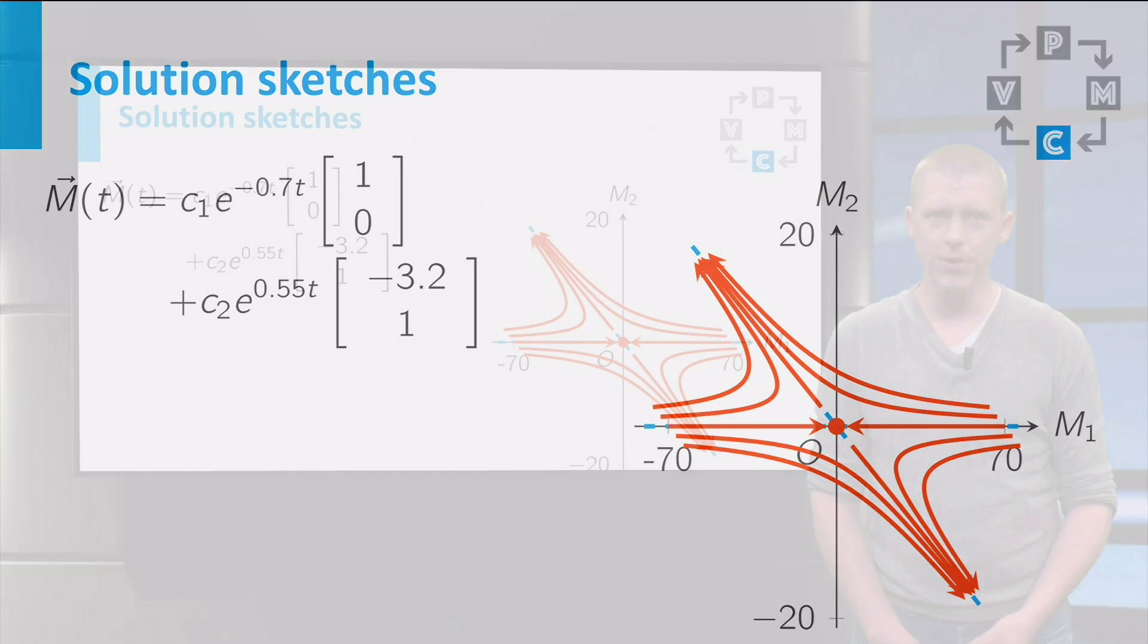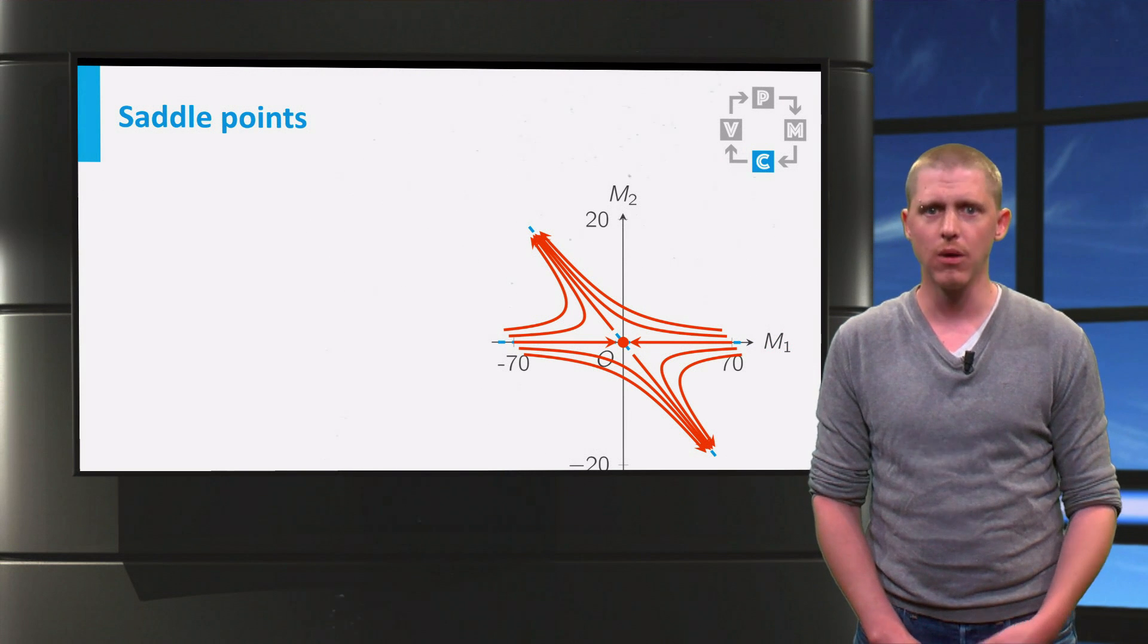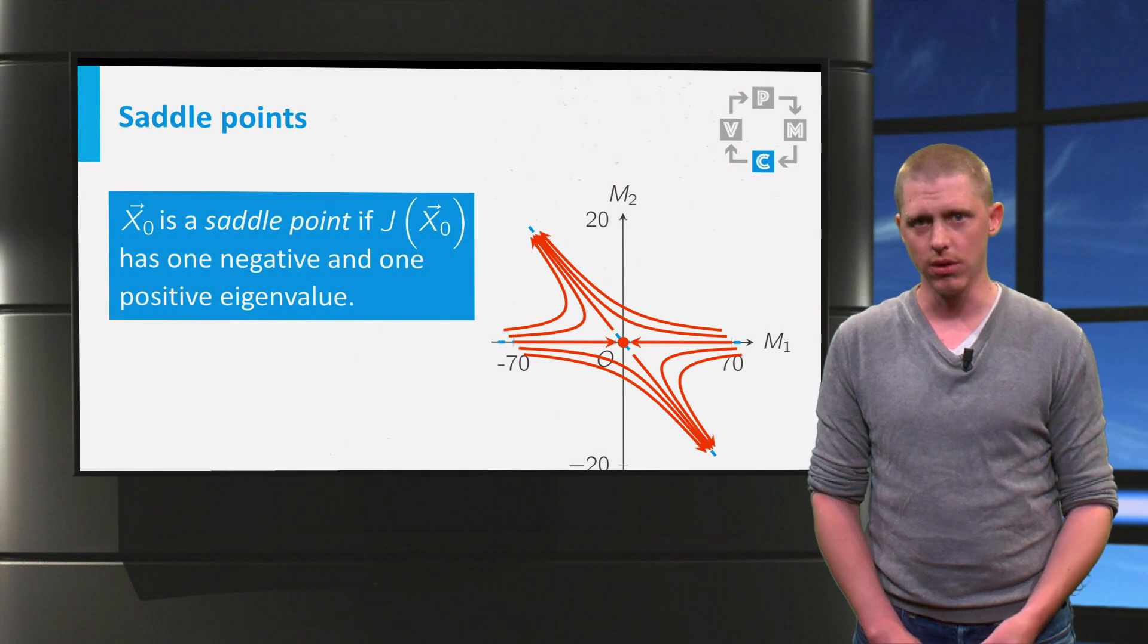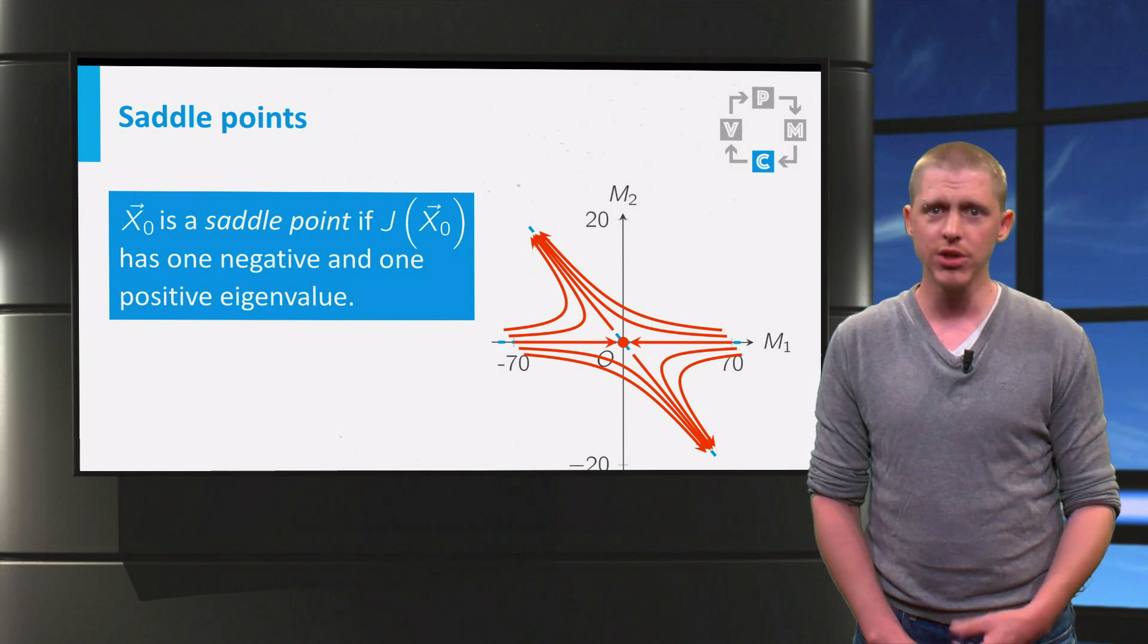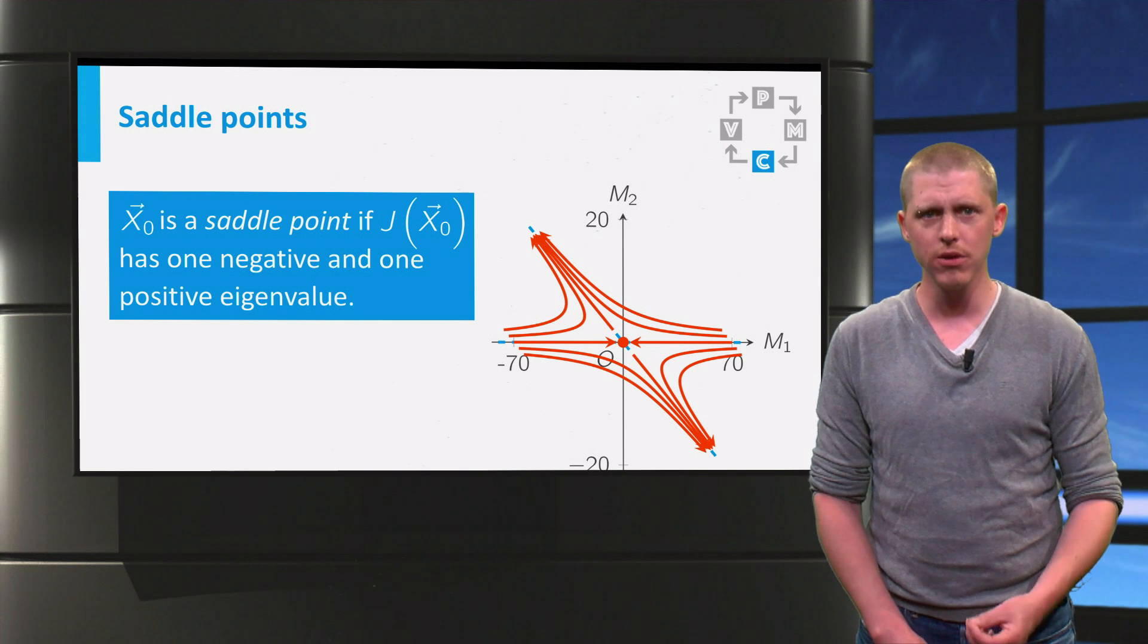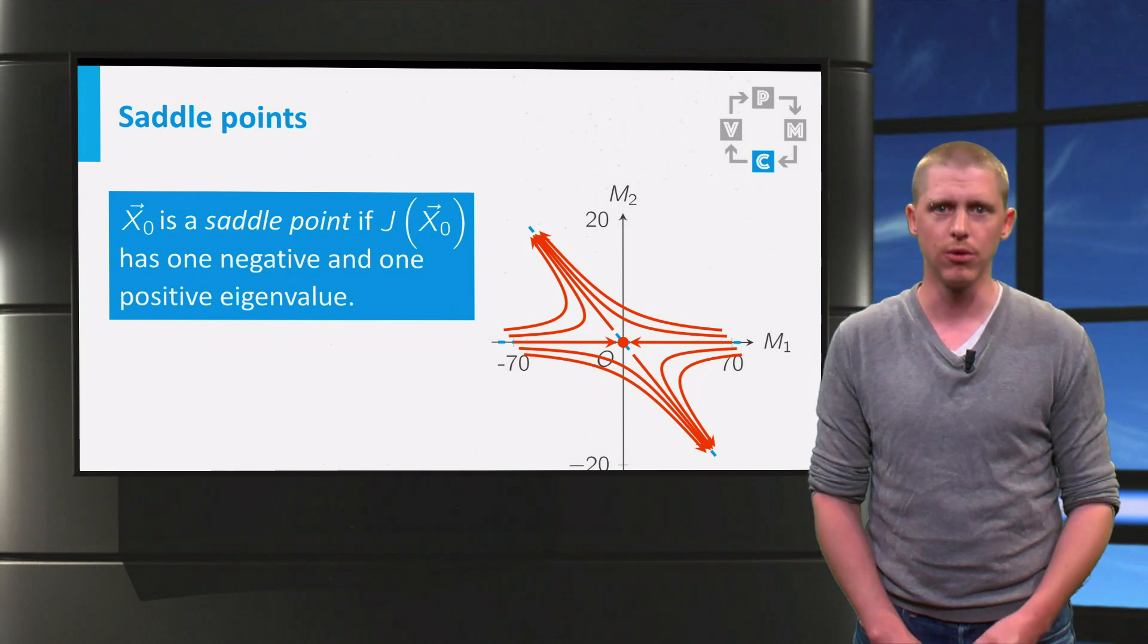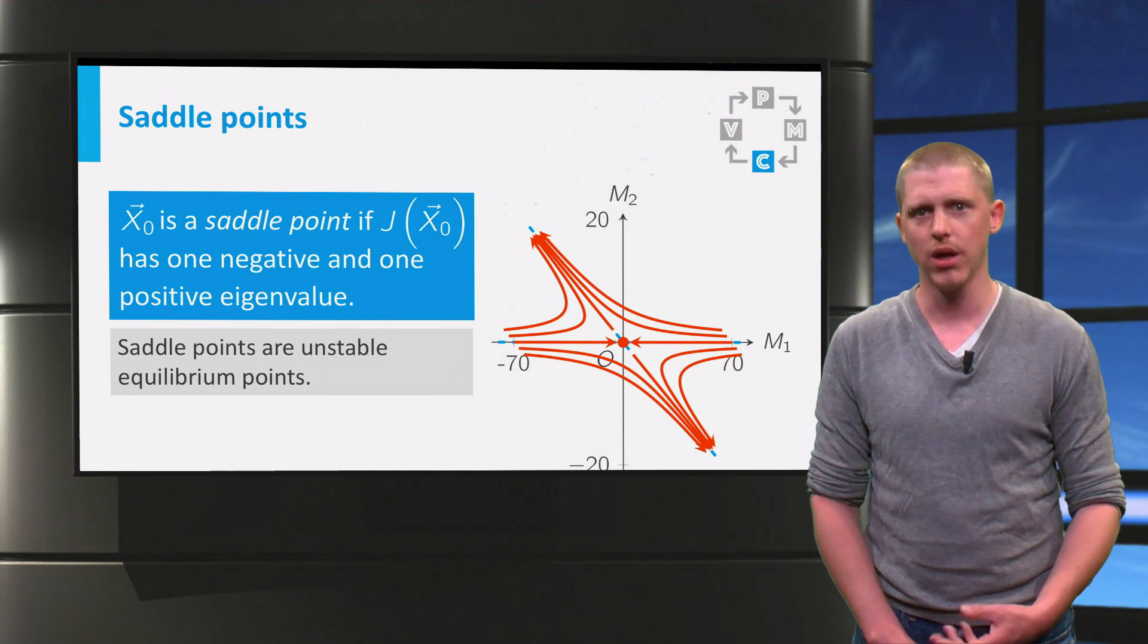The behavior you see in this example is typical for a linearized system with one negative and one positive eigenvalue. This makes 100, 0, an example of a special type of equilibrium point, which are called saddle points. Because at least one of the solutions that start near the equilibrium point leaves the neighborhood around the equilibrium, we call saddle points unstable equilibrium points.